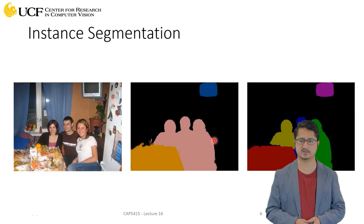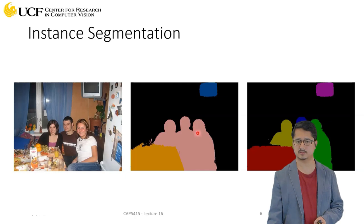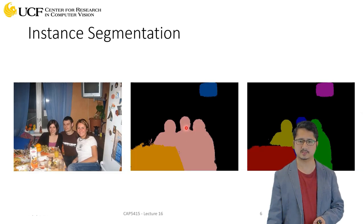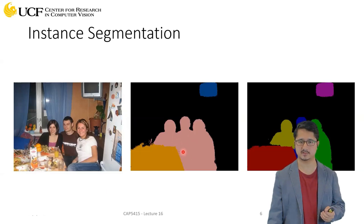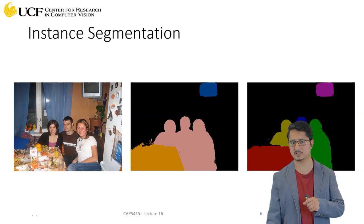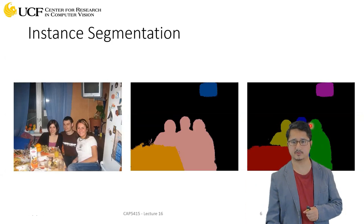For the center result image, semantic segmentation shows blue for television, pinkish color for people, and another color for the table. You can see fine boundaries where people are present, but we don't know the separating boundaries between individual people. That part is missing in semantic segmentation, so we need instance segmentation to create those boundaries, even though two regions share the same semantic category.